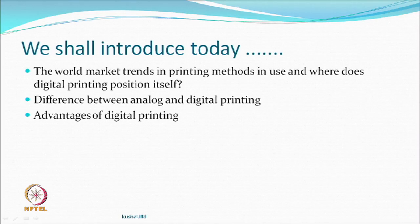Interestingly, the initial people who got interested in making machines were very different from those who were making textile printing machines. People like Epson, who were making printers for paper printing, got interested in this business. Things have progressed and we believe they are going to progress further. Today we will look at the market trend and how analog and digital printing are two different methods, and the possible advantages of digital printing.